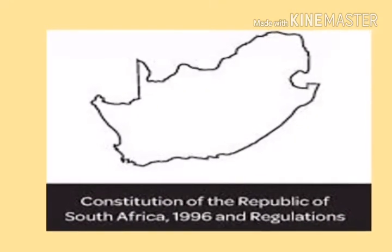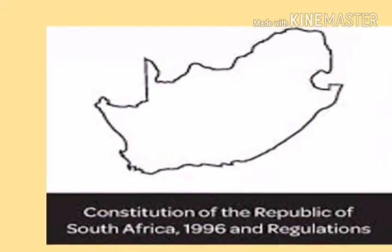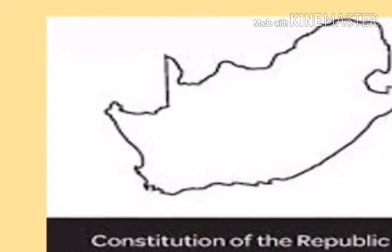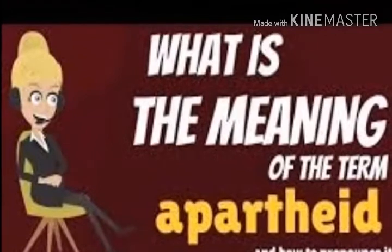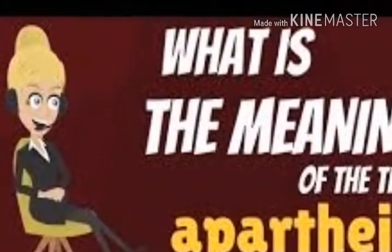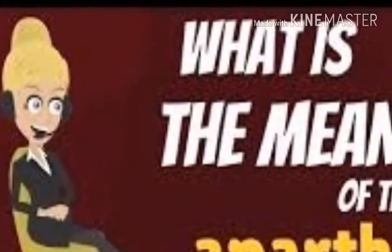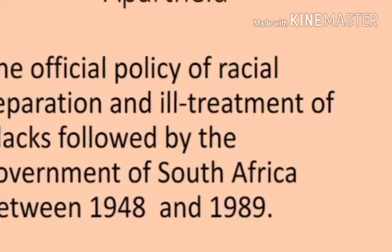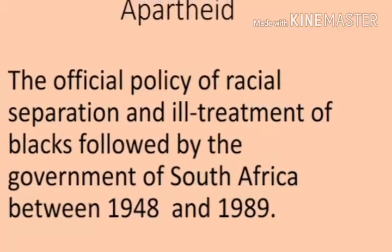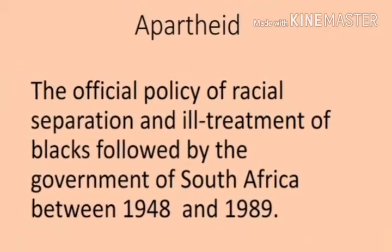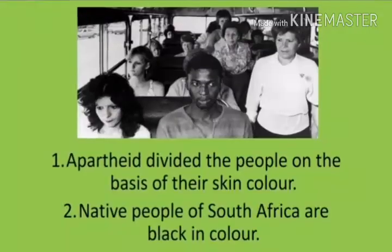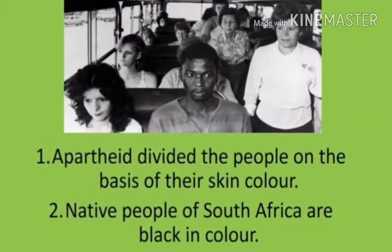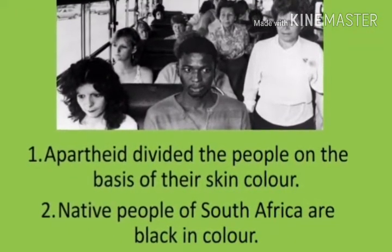In this chapter we will read about the democratic constitution in South Africa. In South Africa there was an apartheid system. The apartheid system was the official policy of racial separation and ill treatment of blacks followed by the government of South Africa between 1948 and 1989. The system of apartheid divided the people and labelled them on the basis of their skin colour.